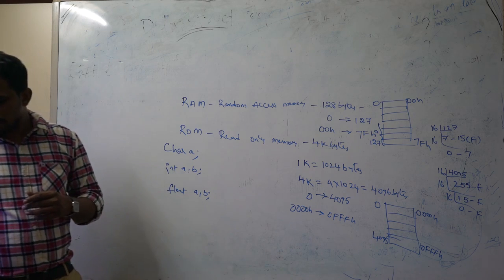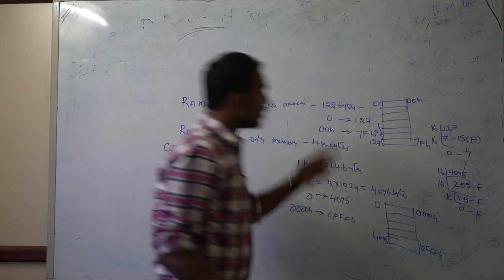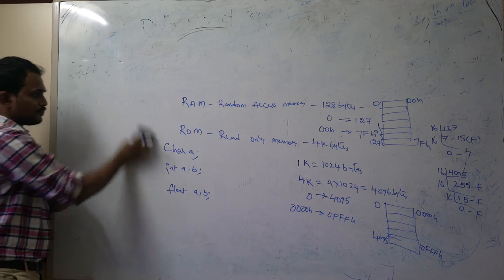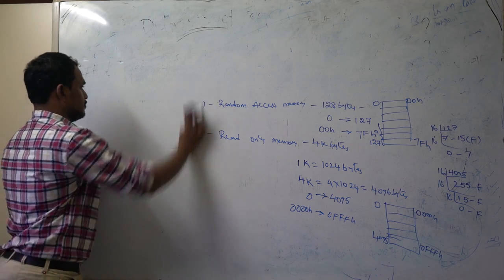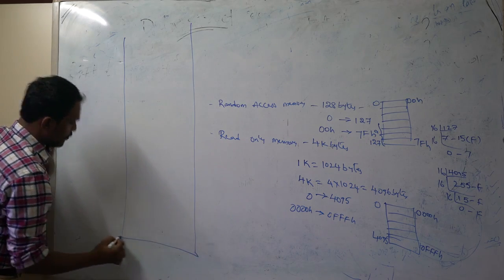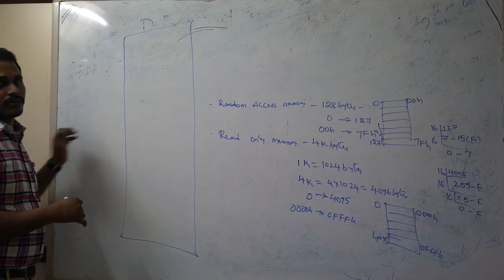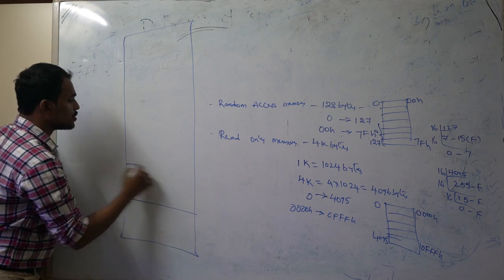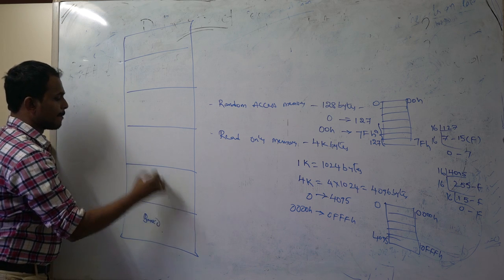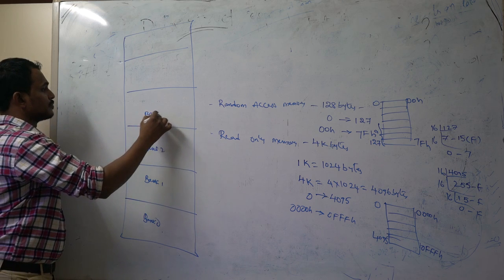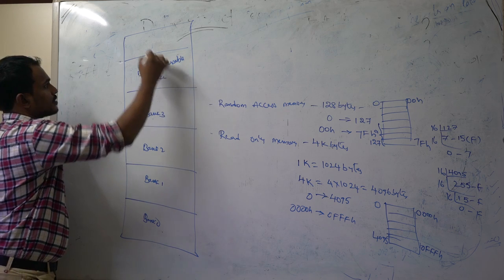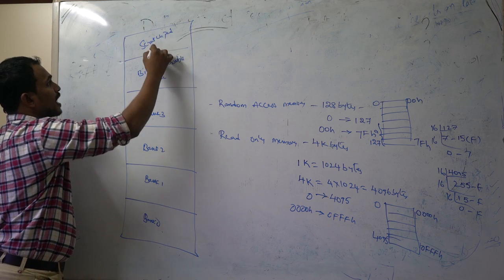The complete 128 bytes of RAM memory is divided into many sections inside. Looking at the complete RAM memory organization of the 8051 family, the RAM is divided into: Bank 0, Bank 1, Bank 2, Bank 3, a Bit-Addressable space, and a Scratchpad memory area.